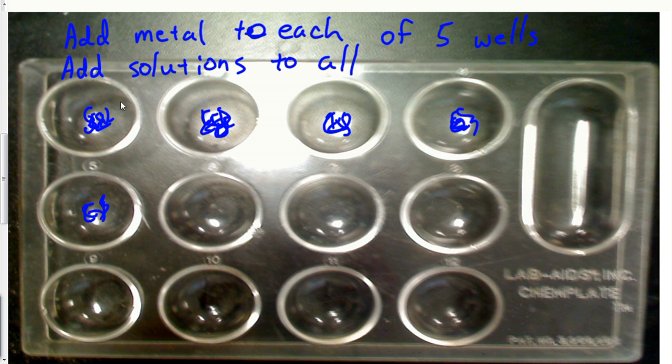What do you need to be very particular about when you're telling somebody what to do here? Make sure they know that each well gets what? A different solution. One well gets the AgNO3, one well gets the CuCl2. You're trying to see what each one of these do with each different material.